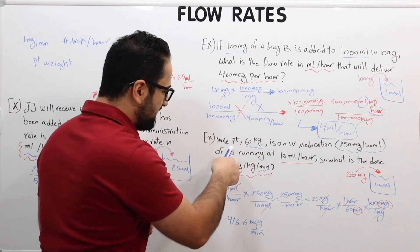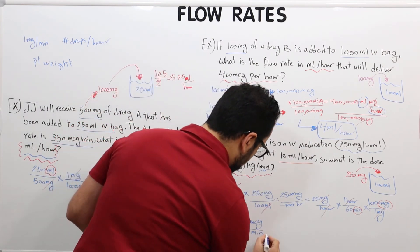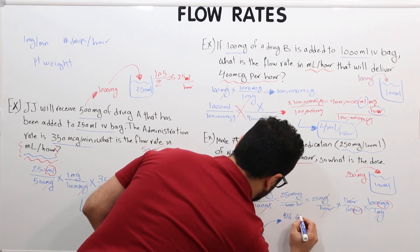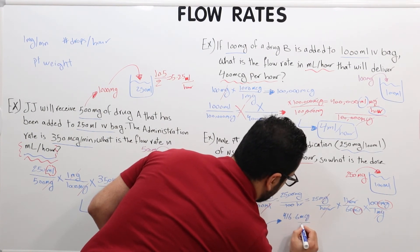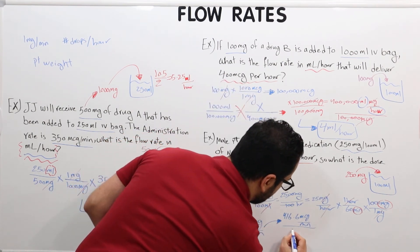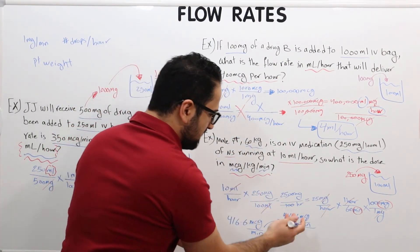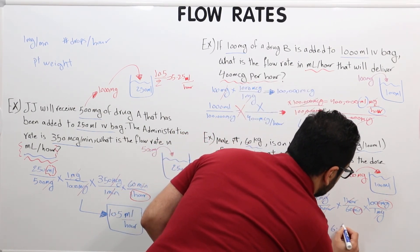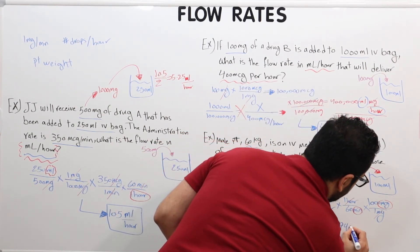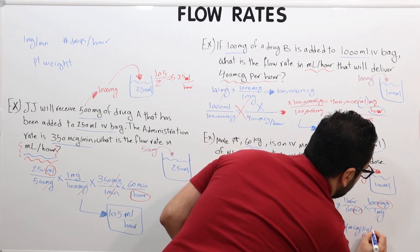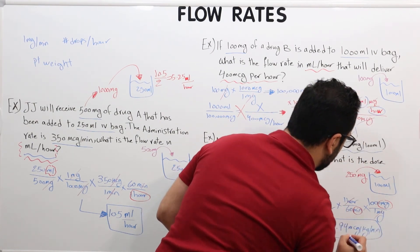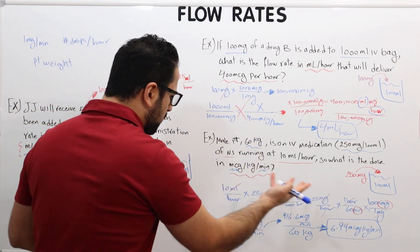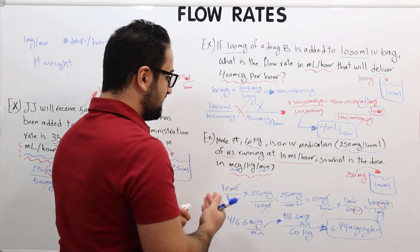Now at the last step, I divide by the patient's weight, which is 60 kilograms. So 416.6 micrograms per minute divided by 60 kilograms gives 6.94 micrograms per kilogram per minute — the final answer for this question. See how much easier it is when you just take two units first instead of all three at once. This is my method for solving such questions.